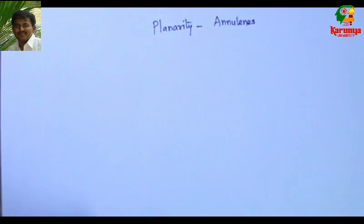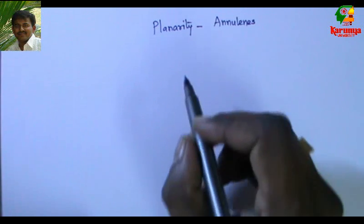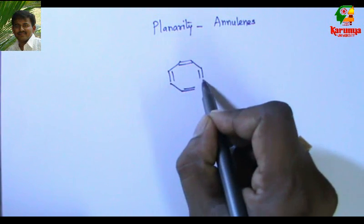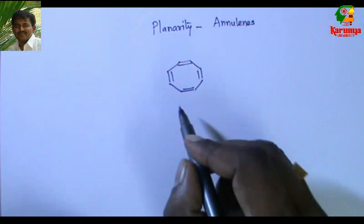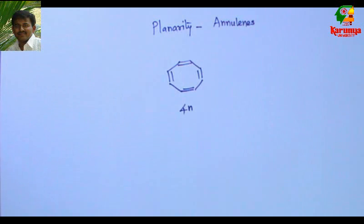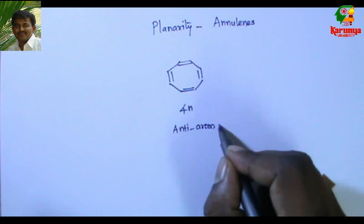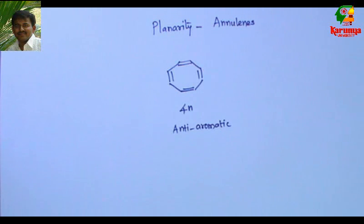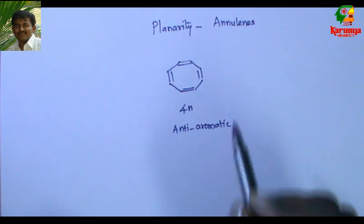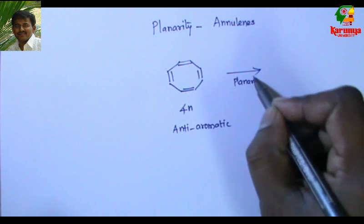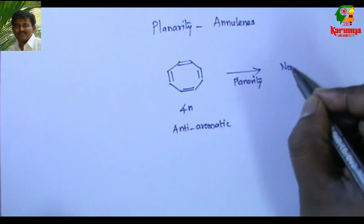Basically, these are cyclic polyenes. Consider cyclooctatetraene (COT). The number of pi electrons in this is 4n, so it should be anti-aromatic — provided it is a planar molecule. If planarity is not there, then this molecule becomes non-aromatic.